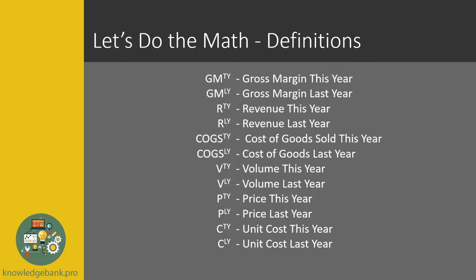Before I jump into the math we will define several things. Here you see all of the inputs required to calculate the gross margin price volume mix. We need to know gross margin this year and gross margin last year — in your case it could be forecast or plan — as well as revenue this year and last year, COGS this year and last year, and volume, price, and cost. Here C stands for unit cost, this year versus last year.